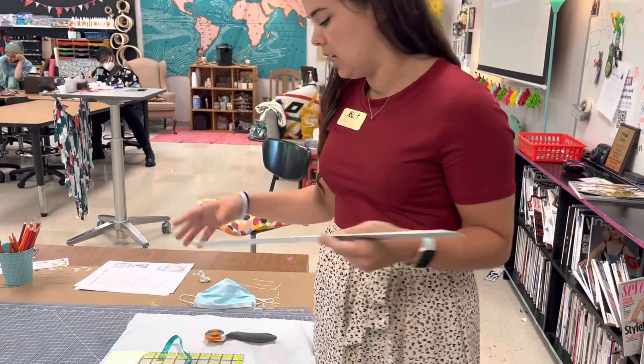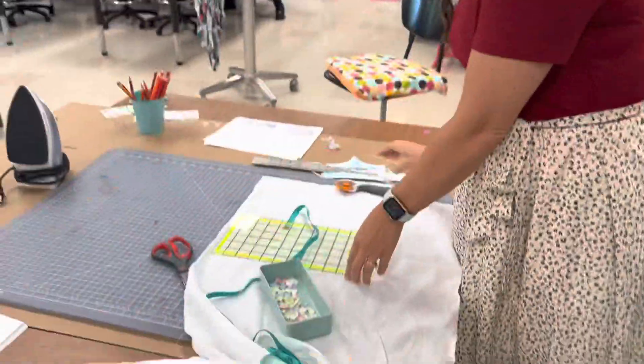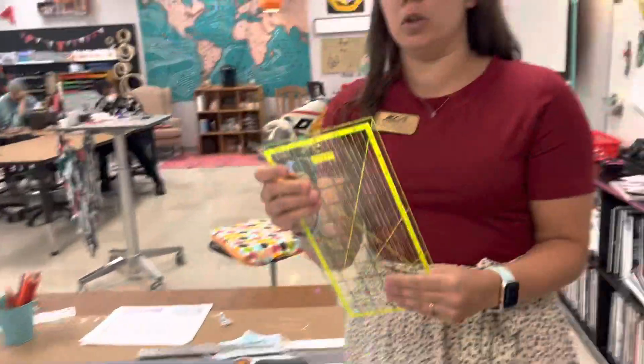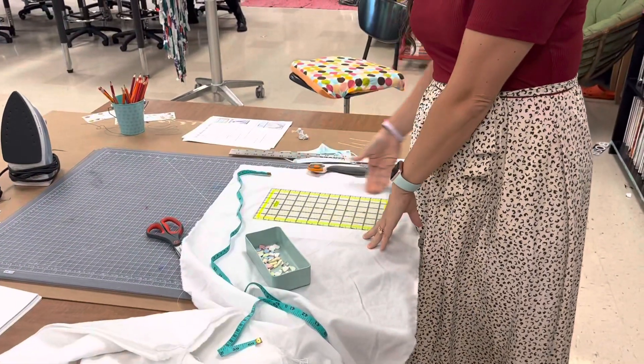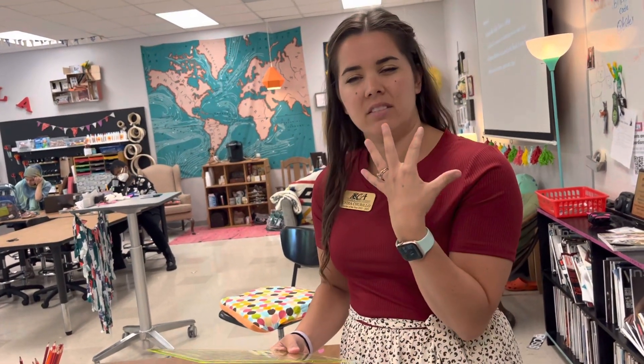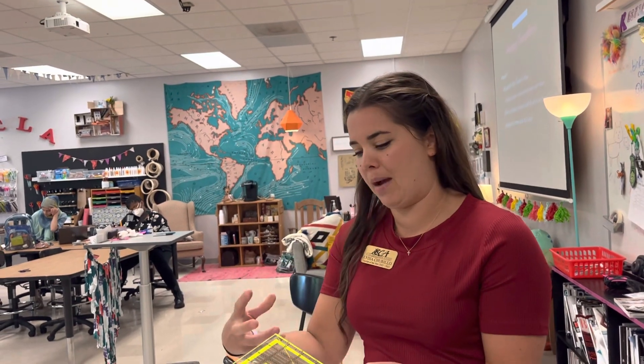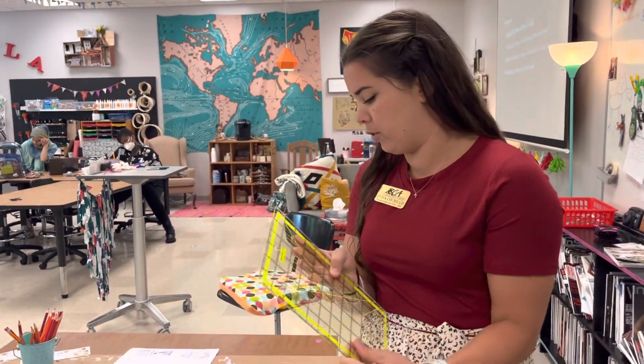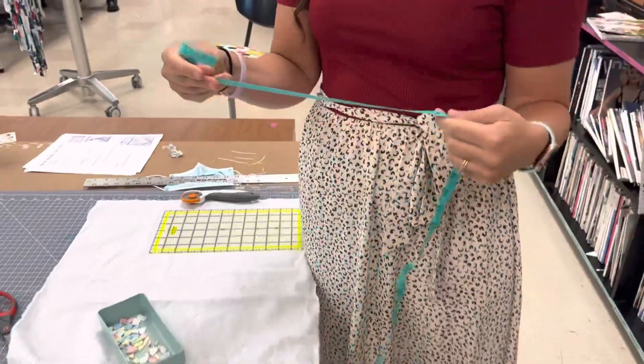We have this clear ruler board. This is nice to be able to lay on top of fabric and measure and see your fabric underneath. That's really helpful when your fabric has patterns and you're wanting to make sure, like let's say you're making a mask, maybe your pattern had a really cute dinosaur that you wanted to make sure was on the front middle. You'd want to be able to see your fabric while you're measuring it.